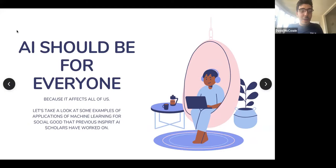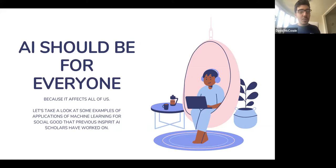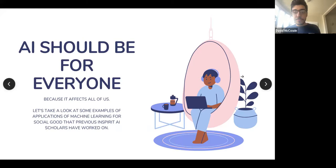This talk is titled AI for All because AI affects everyone, so it should be understood and utilized by everyone. I want to focus on specific examples of how AI can affect something you might be interested in. In fact, almost every one of these examples has a project at InSpirit AI on how AI applies to the topic. This is the next portion of the talk: AI plus X.